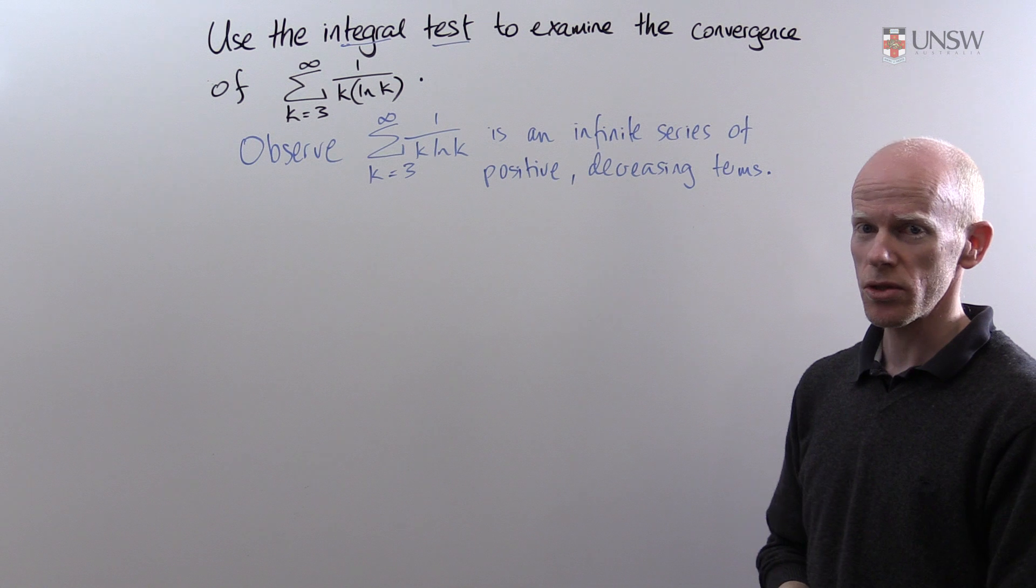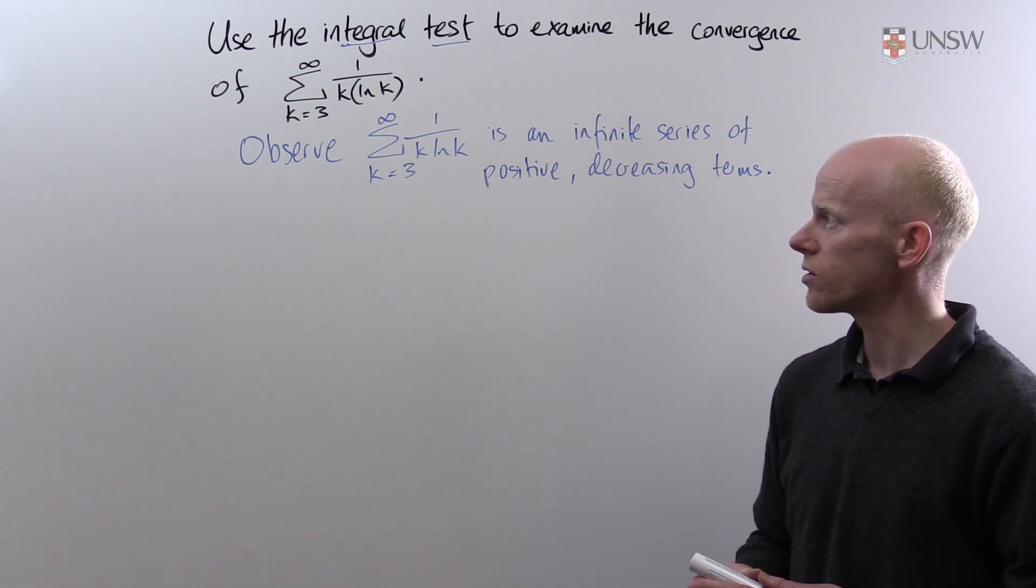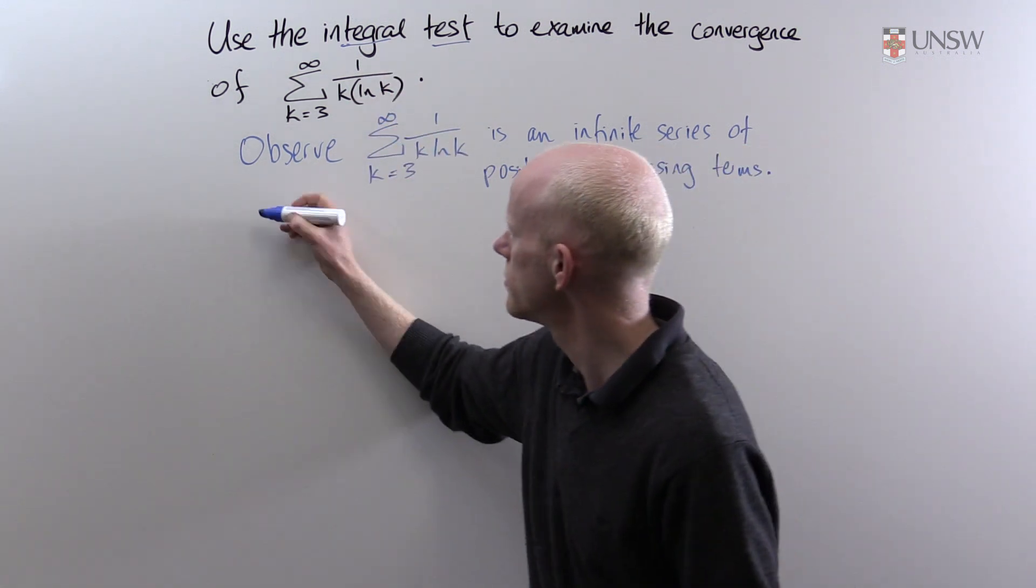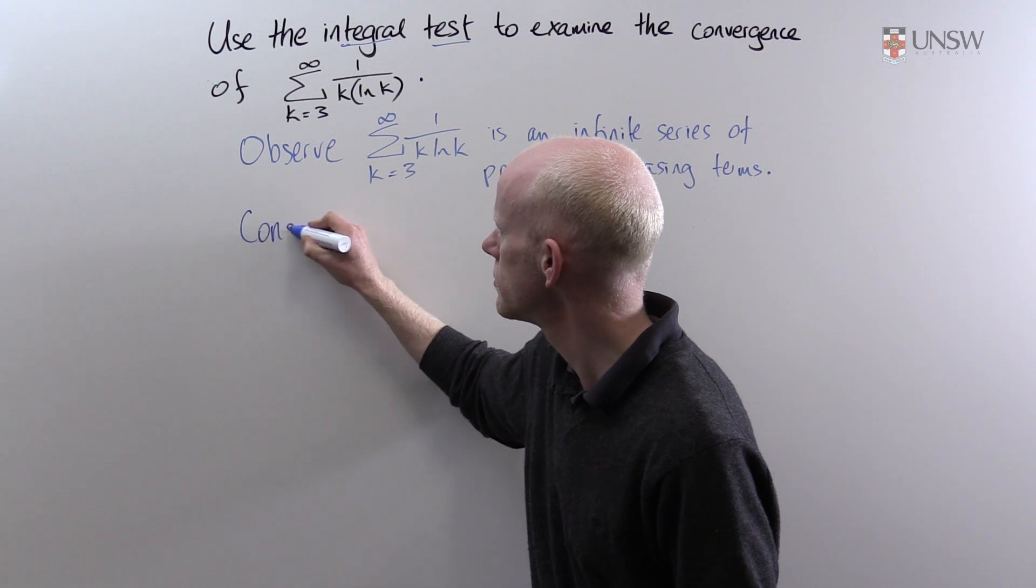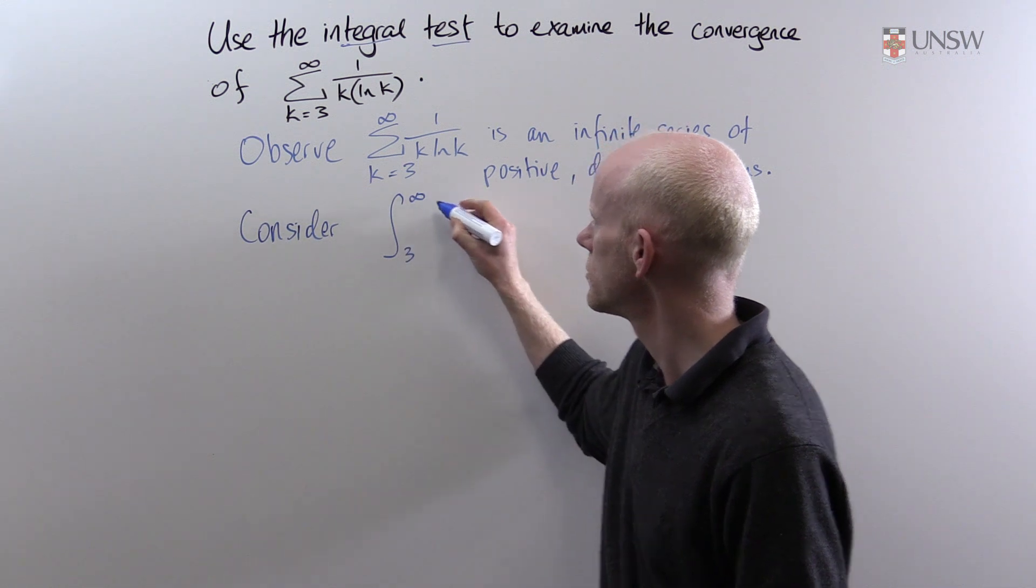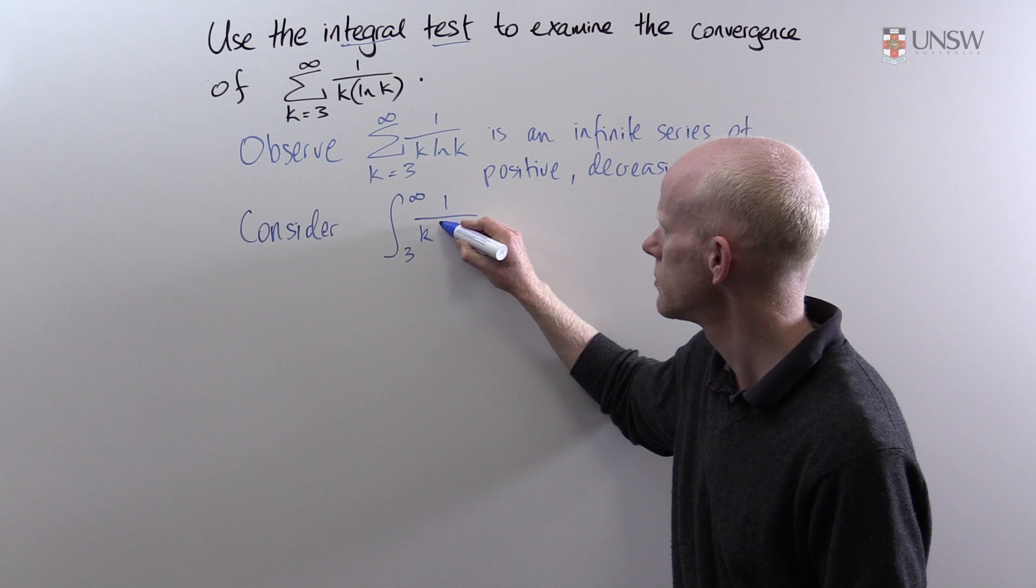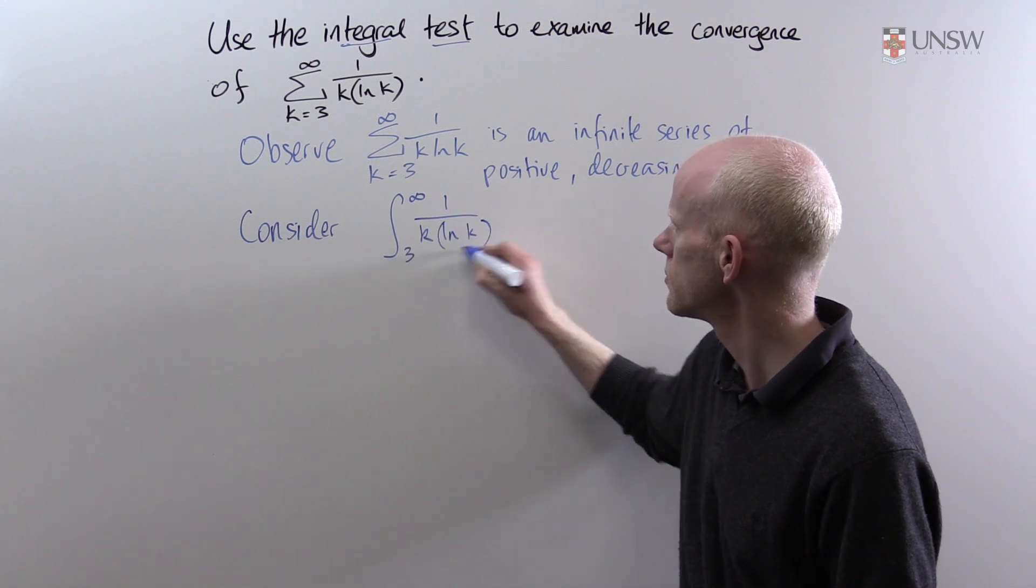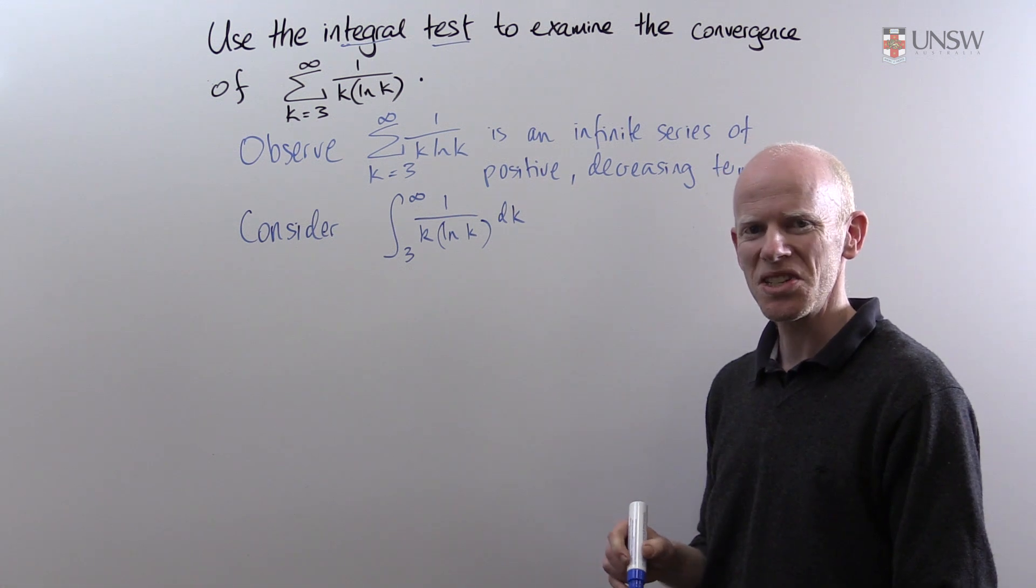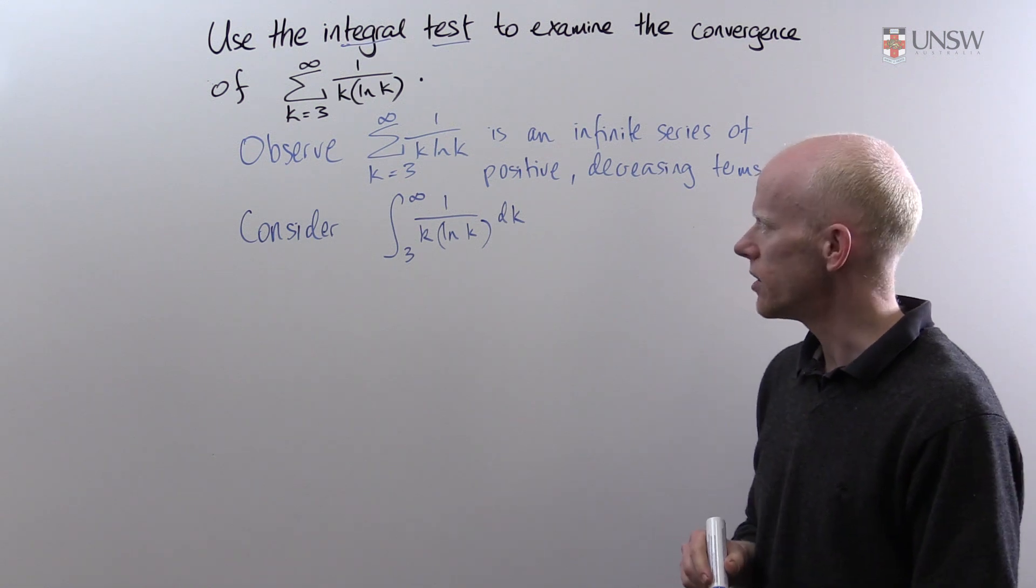We're now ready to examine the convergence of the series and we're going to do that by considering the improper integral of 1 over k log k. Just to remind you this is an improper integral because the upper limit of integration is infinity.